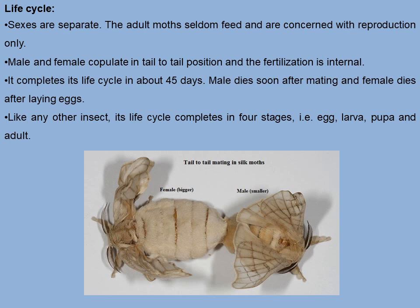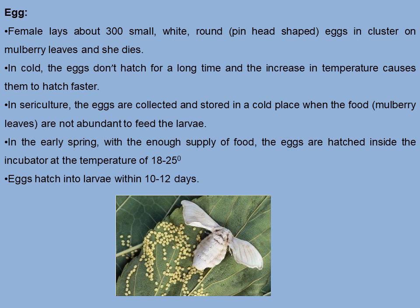The sexes are separate; adult moths seldom feed and are concerned with reproduction only. Male and female cooperate in a tail-to-tail position and fertilization is internal. The life cycle completes in about 45 days. The male dies soon after mating and the female dies after laying eggs. The life cycle completes in four stages: egg, larva, pupa, and adult. The antennae are a very characteristic feature of this moth, and the female is larger compared to the male.